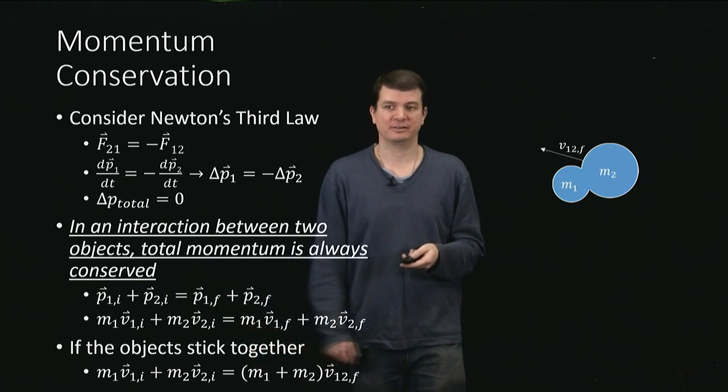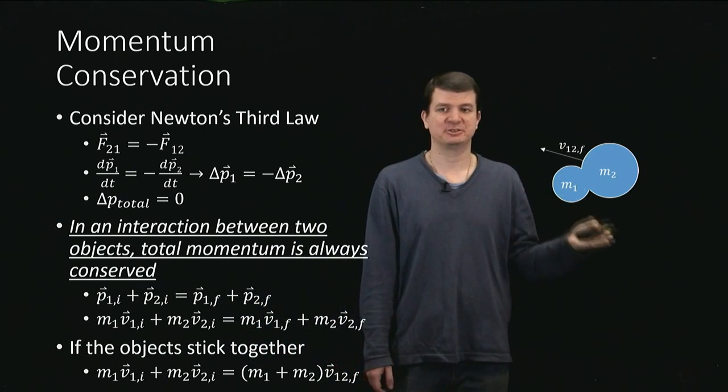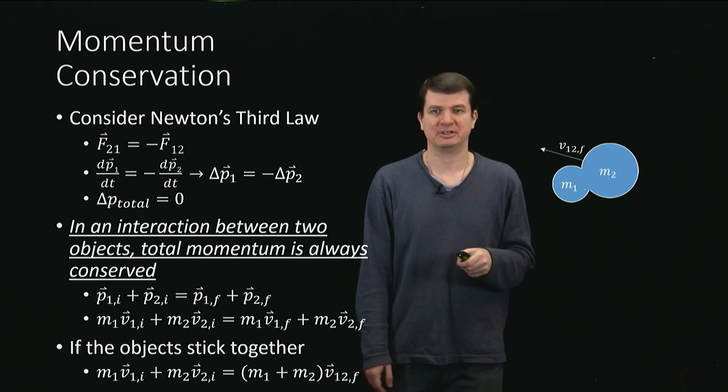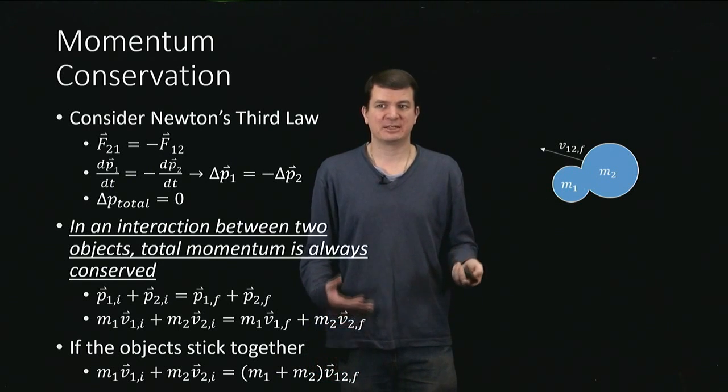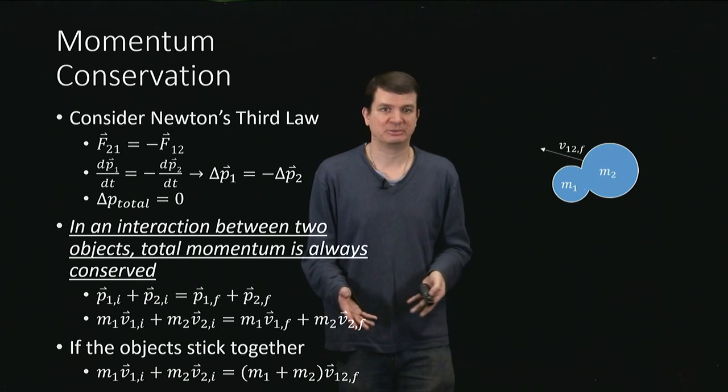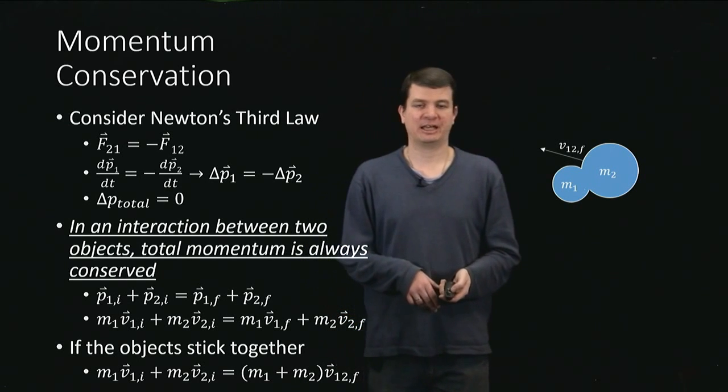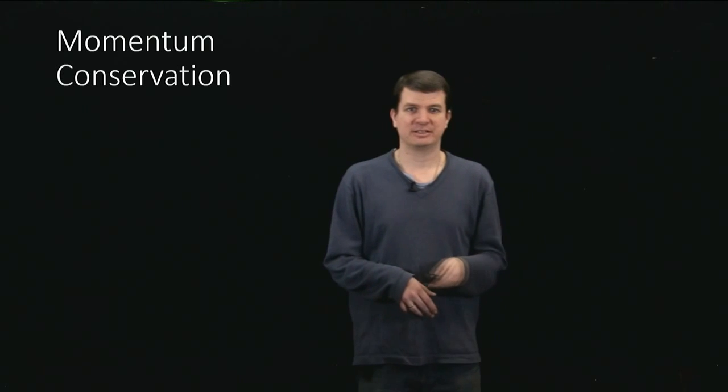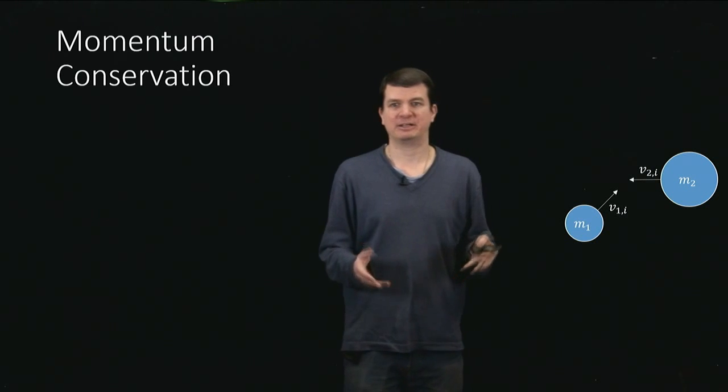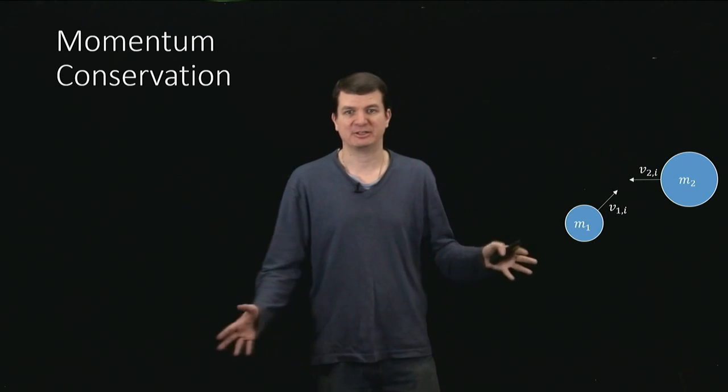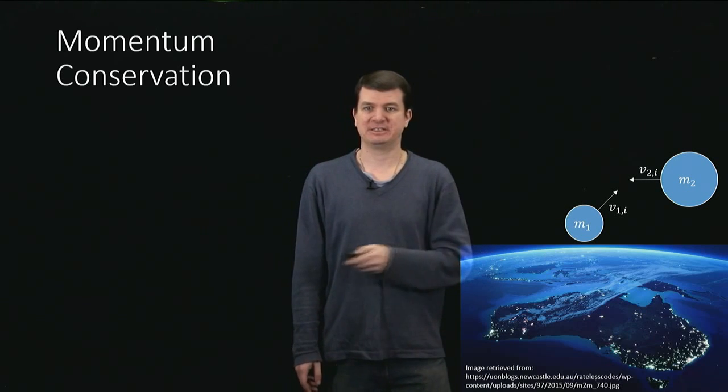And again, knowing the two initial velocities allows us to predict exactly what that final velocity would be. So this seems a really powerful and really simple tool. But in fact, there is one caveat to raise. So let's suppose that we're thinking about this collision of the balls, but we're not thinking about them just in the vacuum of space, but they're actually near the Earth.